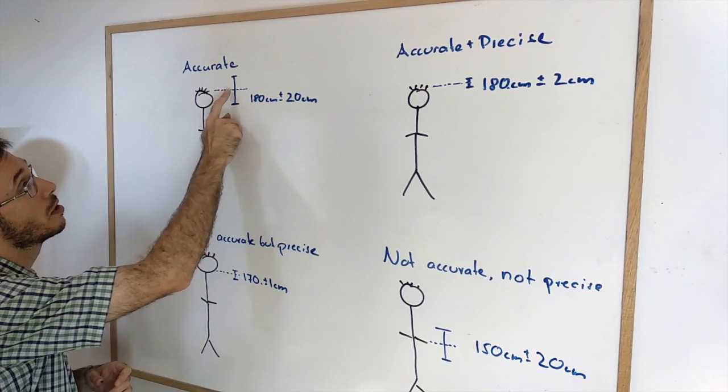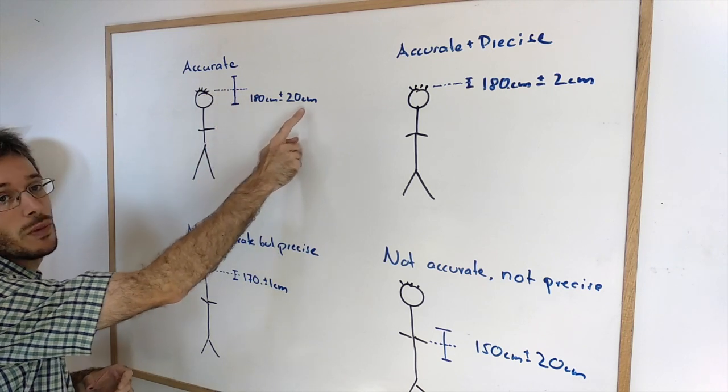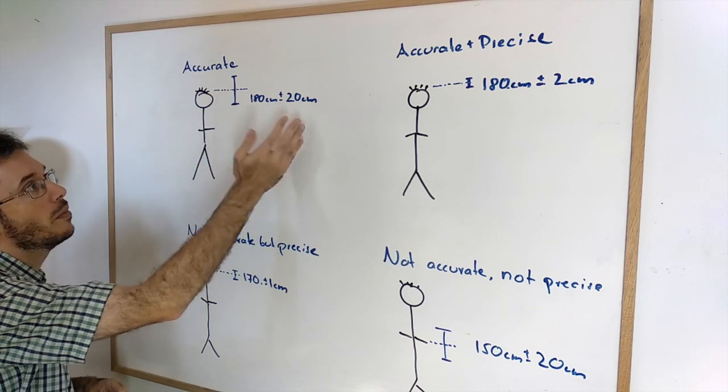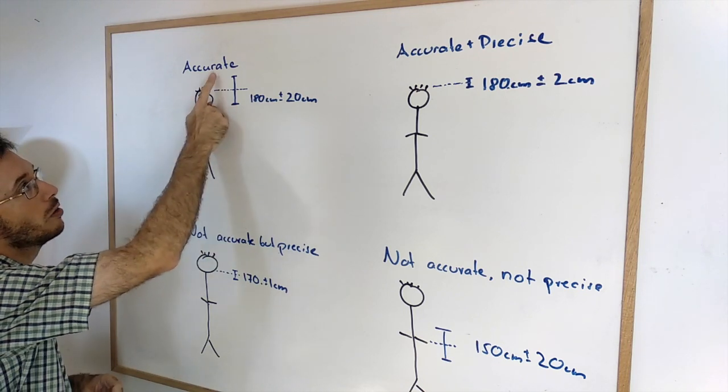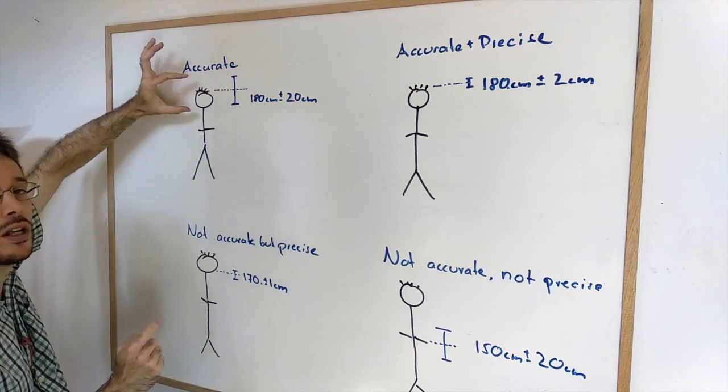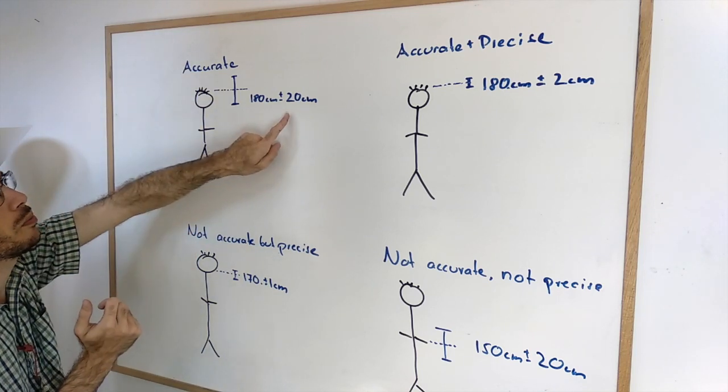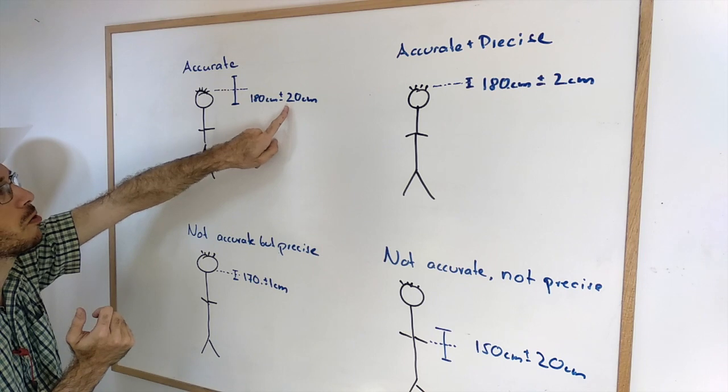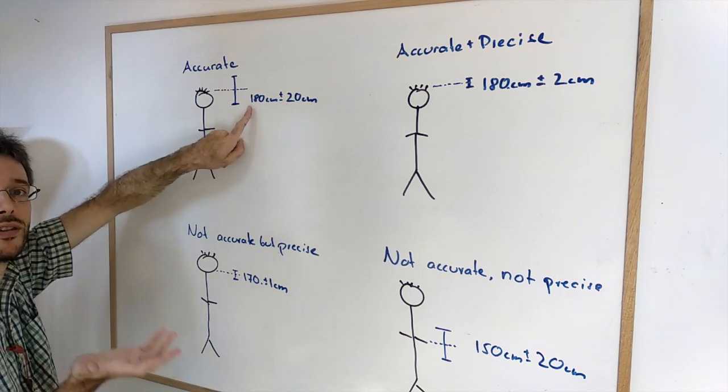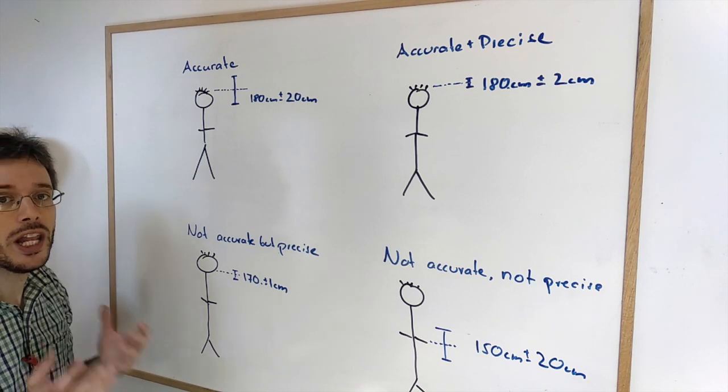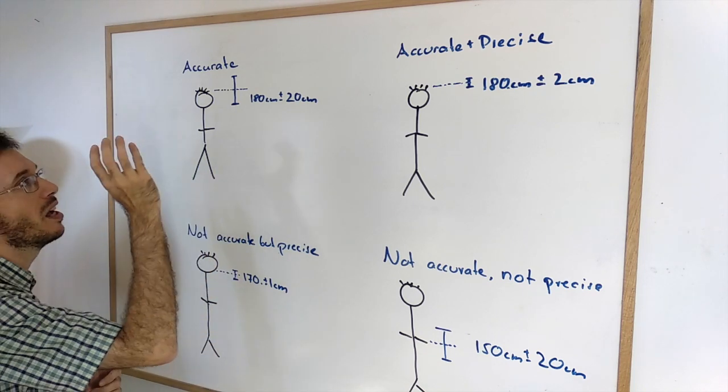One was well it is 180 centimeters plus minus 20 centimeters. Now this measurement here is accurate as with the plus minus 20 centimeters, I'm very sure that the real value is actually in there, but it's not very precise. Like plus minus 20 that means it could be anything from 160 to 200 centimeters. The first goal of any measurement is always to be accurate.